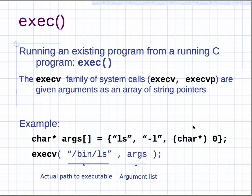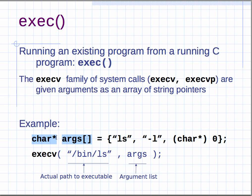The execv family of system calls works similarly. execv and execvp take arrays of string pointers instead of individual arguments. You set up an array like `{"ls", "-l", NULL}` — where the last element is a null pointer — and pass that array as the second argument to execv. So with execl you spell out each argument individually, while with execv you set up an array of strings (char*) and pass that array.